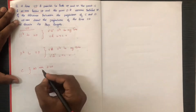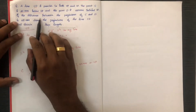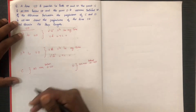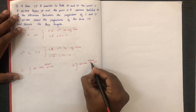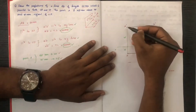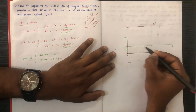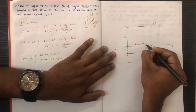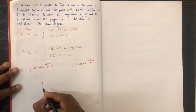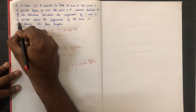Point D is 35mm behind VP. The distance between the projectors is 65mm. Draw the projections of line CD.